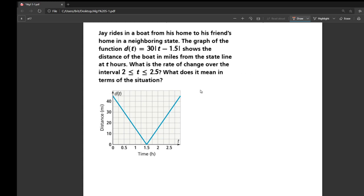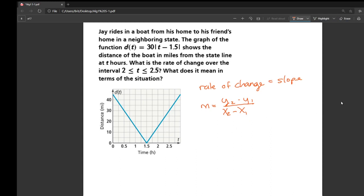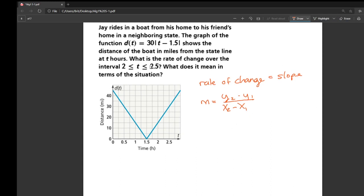When we talk about a rate of change, we're talking about a slope. We can use the slope formula. The slope is our change in our Y value divided by our change in our X value. When we're looking at a rate of change over an interval, like from 2 to 2.5, we're checking out the slope of that line right there. We need to determine those ordered pairs. This one is at 2, 15 and this one's at 2.5, 30.